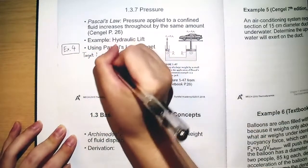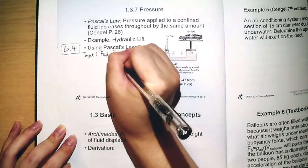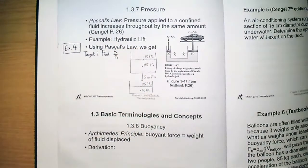That should be our target. Our target is to find out what is F2 divided by F1. That's our target.